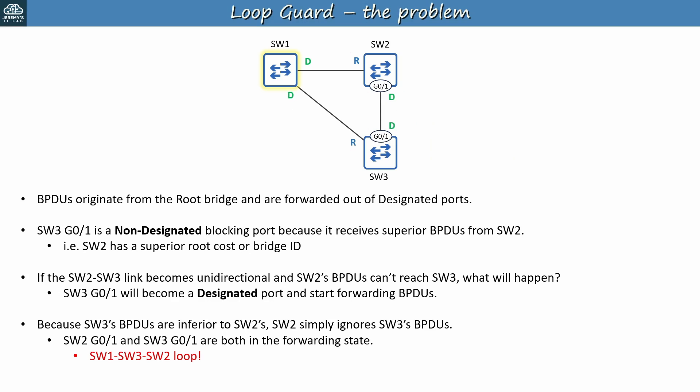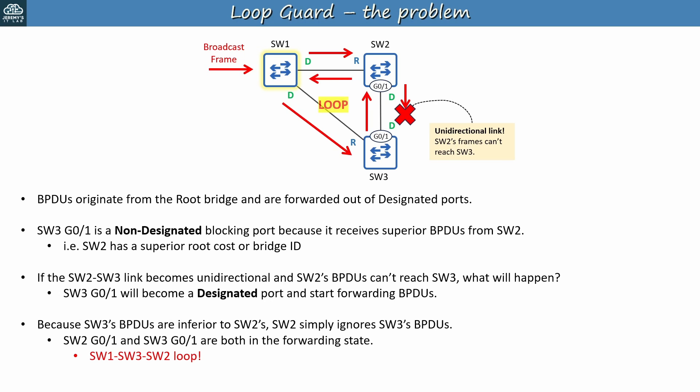If SW1 receives a broadcast frame on one of its other interfaces, it will flood the frame towards SW2 and SW3. The frame flooded to SW2 won't loop because of the unidirectional link — SW2's frames can't reach SW3. But the frame flooded to SW3 will loop around the three switches, with each switch that receives it flooding it repeatedly. So that's the problem with a unidirectional link in a LAN using STP: SW3 G0-1 stops receiving BPDUs, thinks it should become a designated port and start forwarding frames, and then causes a loop.